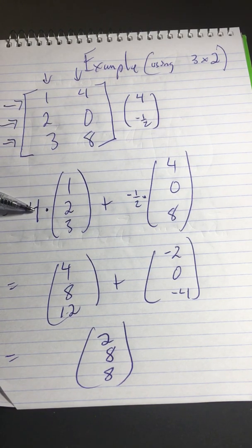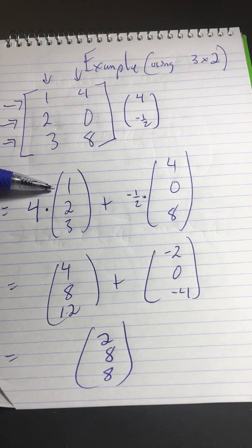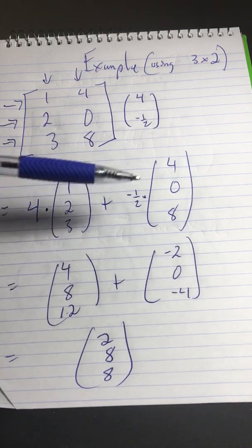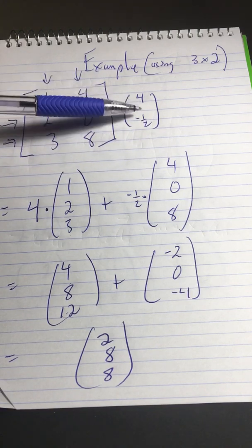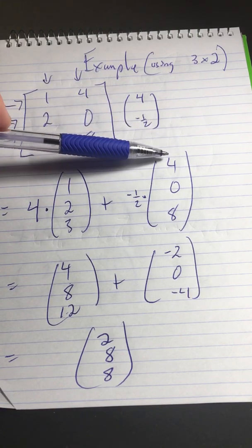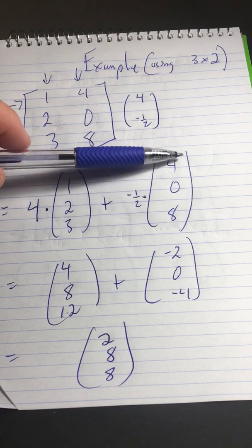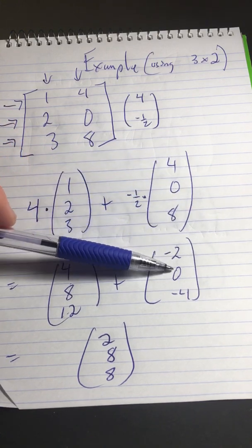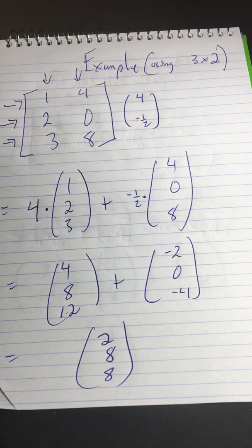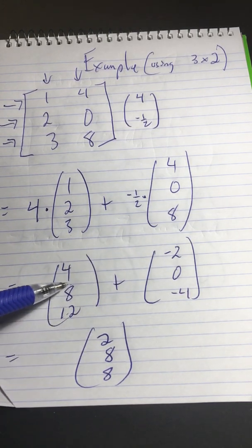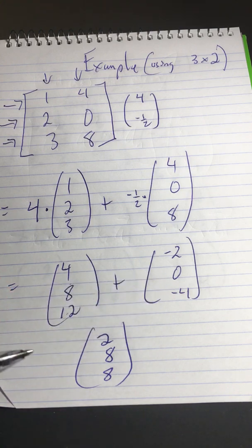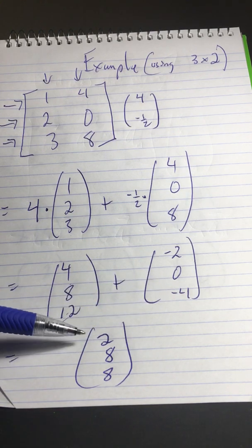Now, to do the scaling, it's really easy. You just scale up the vector. That means you multiply all the entries by 4. So 1, 2, 3 becomes 4, 8, 12. And then in the second column, we're scaling it by the second entry, so we're multiplying all these by a negative half. So 4, 0, 8 becomes a negative 2, 0, negative 4. And then how do you add vectors? Well, you add them naturally. You just add straight across. 4 and a negative 2 is 2, 8 and 0 is 8, and 12 and a negative 4 is 8.